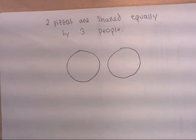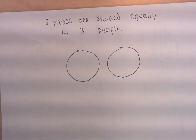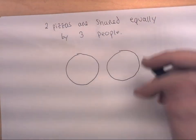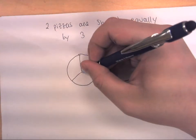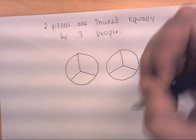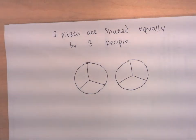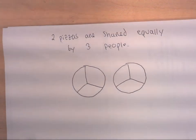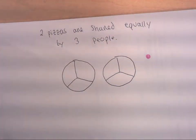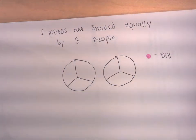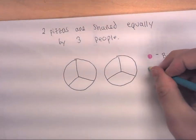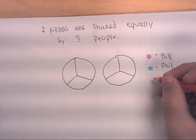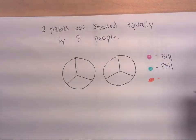You'll have to bear with me and pretend both pizzas are identical in size. I have two whole pizzas and I'm going to share them with three people, so I'll divide each pizza into three equal sections. I'll use color to represent the three different people. This pink represents Bill's share, this light blue-green represents Phil's share, and the red represents Jill's share.